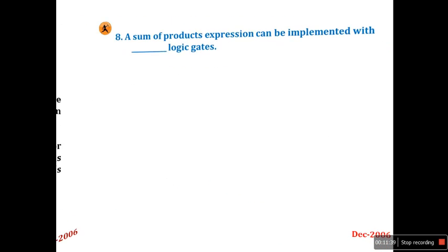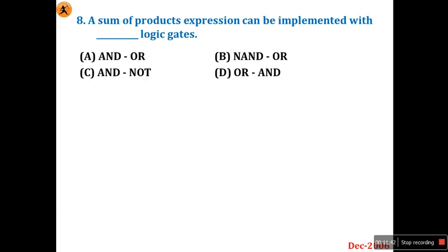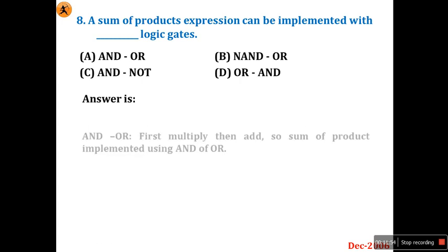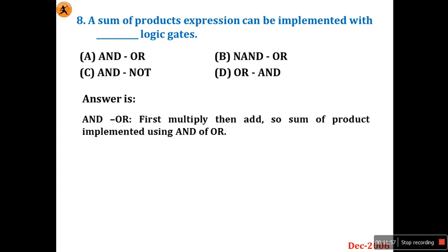Next we'll go for: a sum of products expression can be implemented with which logic? Sum of product, product of sum — using AND-OR, OR-AND, AND-NOT-OR, or OR-AND? Sum of products means first multiply, then add. Sum of product is AND-OR. Product of sum is OR-AND. So be careful: sum of product is AND-OR. Option A is the right answer.